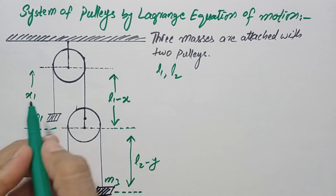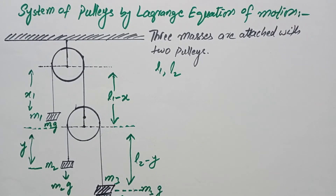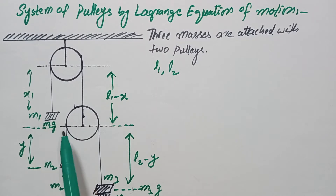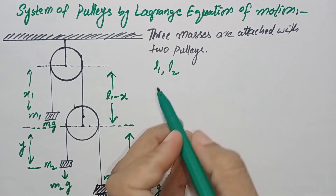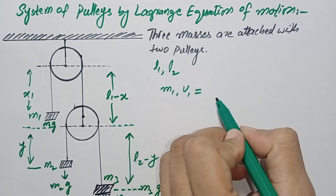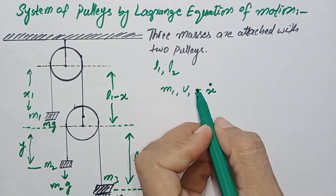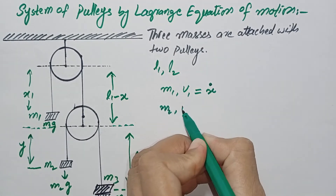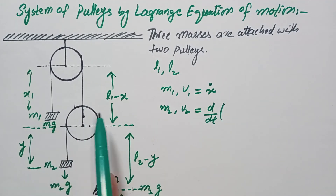The weight acting downward will be m1g for m1 and m3g for m3. Now we will find out the velocities of these three masses to find out the total kinetic energy of this system. The velocity of mass m1 will be v1, which is the time derivative of its position.